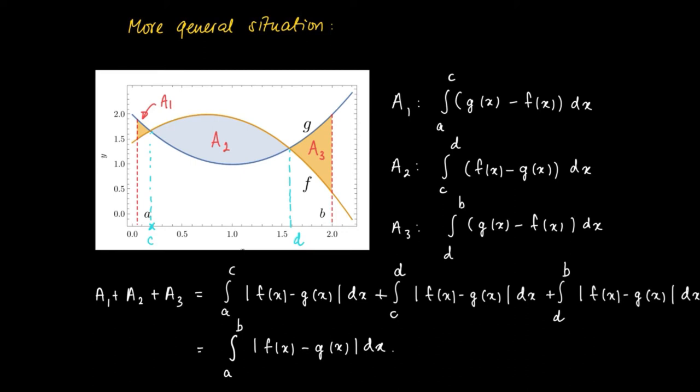This gives the precise statement for how to calculate the area enclosed by two graphs if we don't know what the points of intersection are exactly and which function is above the other where and when.